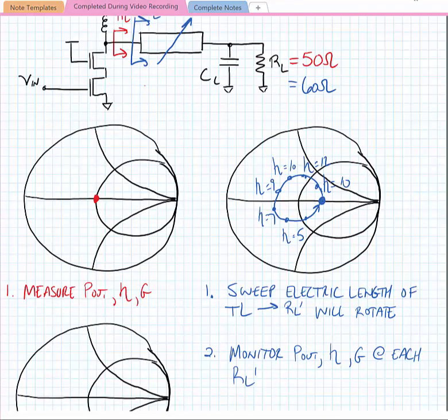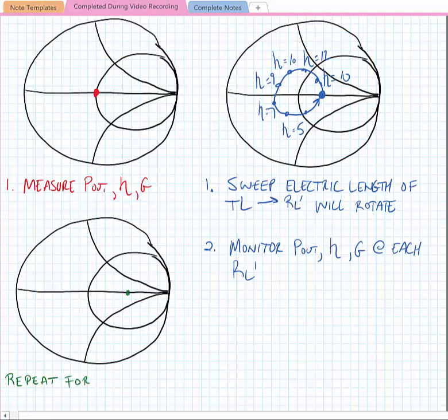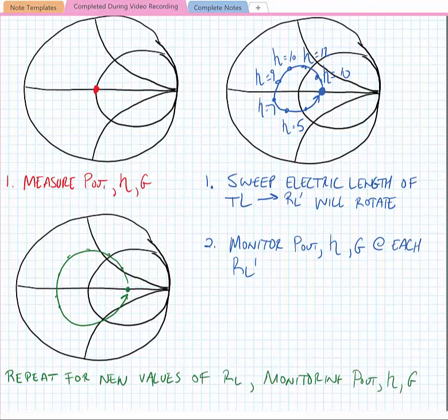Now you might imagine if we were to increase the impedance that we were trying to drive to say 70 ohms and we were to sweep the electric length of the transmission line, we would just go through a bigger circle, and we could similarly monitor output power, efficiency, and gain at each of these points.